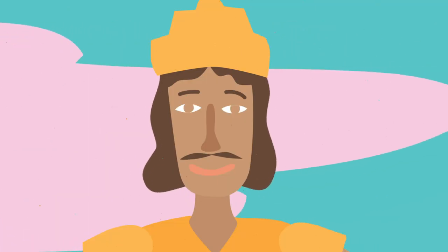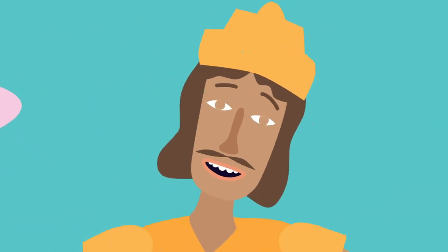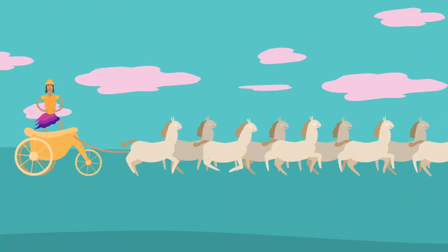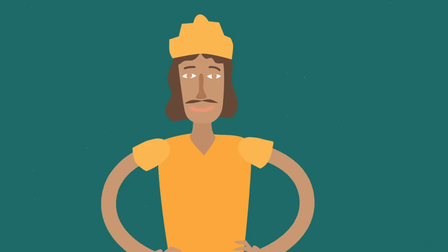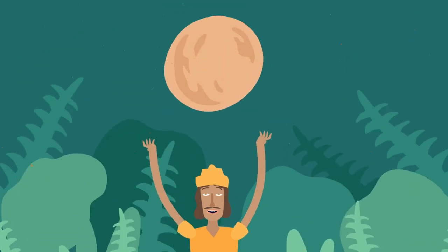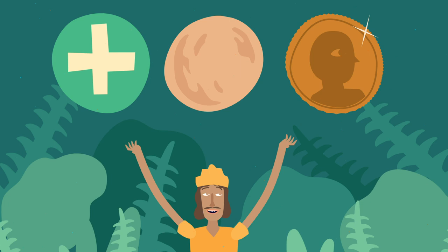The ancient elixir is also personified in the god Soma, who is depicted riding a three-wheeled chariot pulled by a team of ten white horses. He is the lord of plants associated with the moon, or chandra, and known as the bringer of health and prosperity.